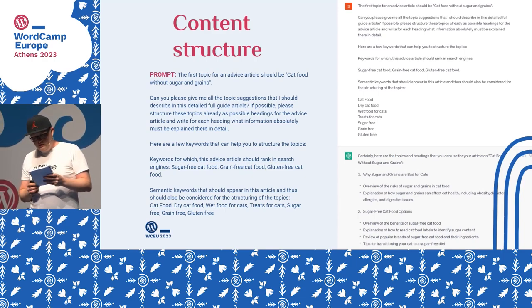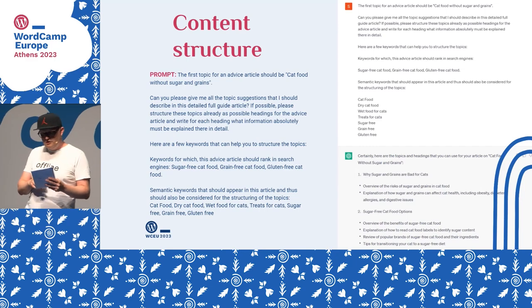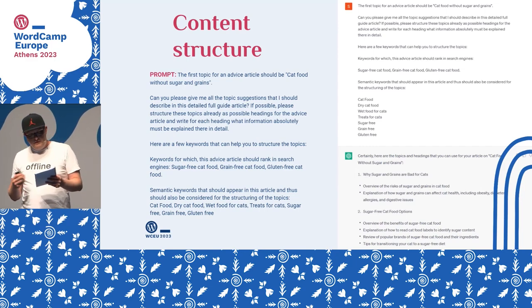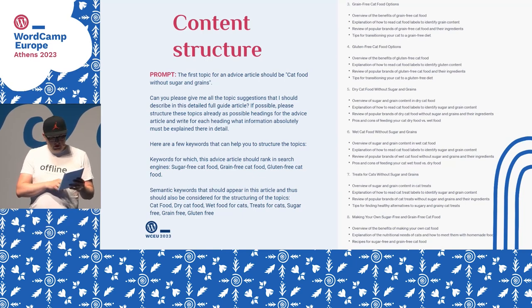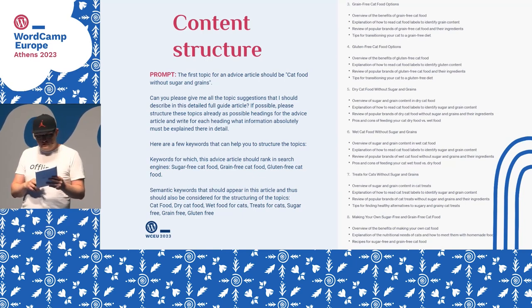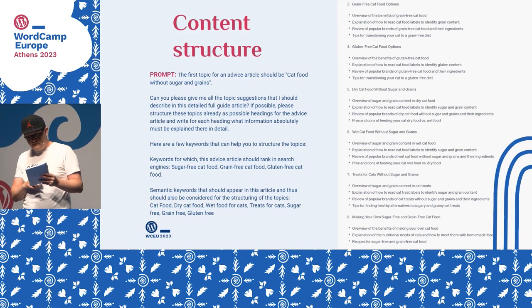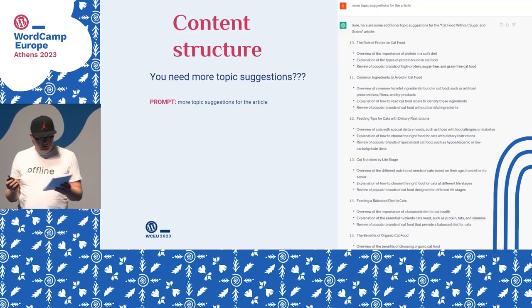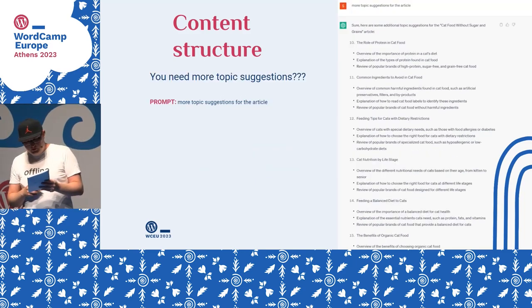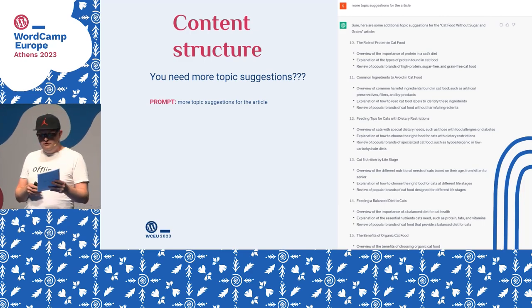Generally, here are the topics and headlines. For example: 'Why sugar and grains are bad for cats' or 'Making your own sugar and grains-free cat food.' You need more? No problem — ask ChatGPT for more and ChatGPT responds with more.